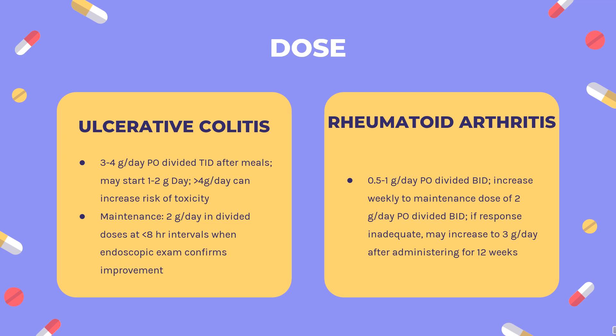Rheumatoid arthritis — indicated for inadequate response or intolerance to salicylates or other NSAIDs. Delayed release: 0.5–1 g/day PO divided BID. Increase weekly to maintenance dose of 2 g/day PO divided BID. If response is inadequate, may increase to 3 g/day after administering for 12 weeks.